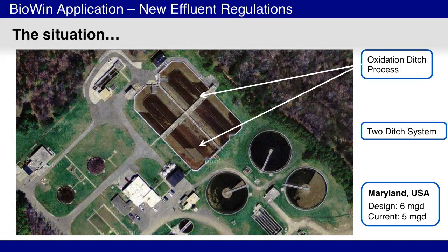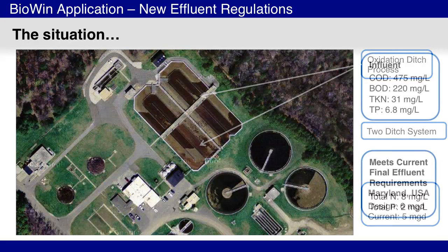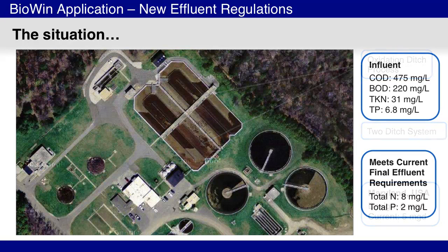This system consists of two identical oxidation ditches, each receiving half of the total influent flow. The influent was typical for North American wastewater. The design flow rate was 6 million gallons per day, and the plant was treating 5 million gallons per day at the time of the study.